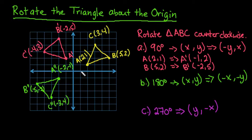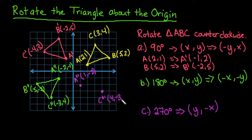Starting with A at (2, 1), if we switch these it would be (1, -2). So I would go over 1 and down 2. This would be our A triple prime. For C at (3, 4), we switch to get (4, -3): over 4 and down 3. For B at (5, 2), we switch to get (2, -5). Then we connect our points.